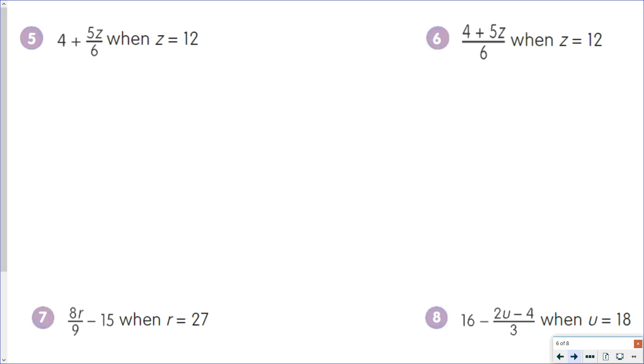So we're going to evaluate our expressions here. So 4 plus 5 times 12 over 6. So again, my first step is substitution. Then I do one thing at a time. So 5 times 12 is 60. 60 over 6 is 10. And 4 plus 10 is 14.